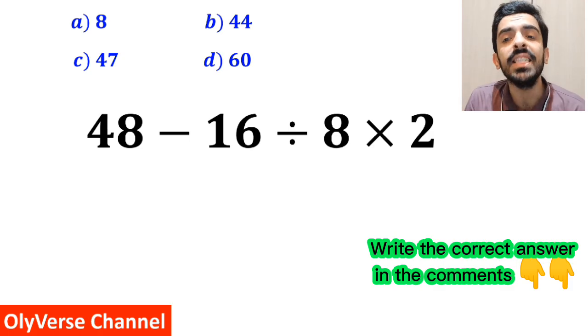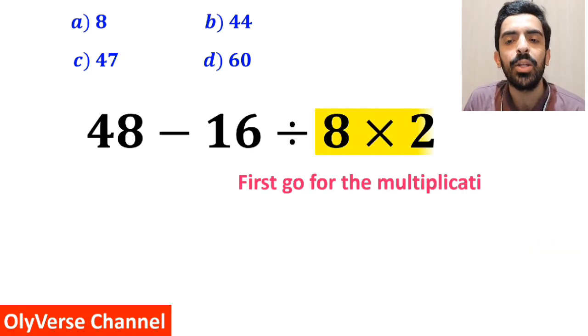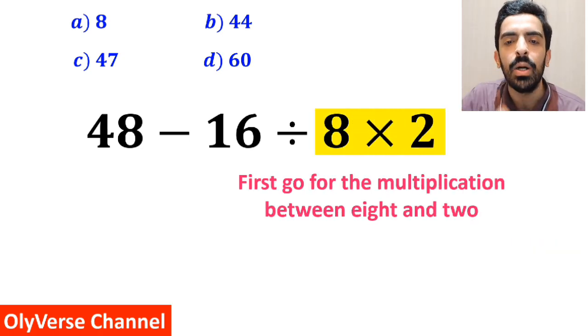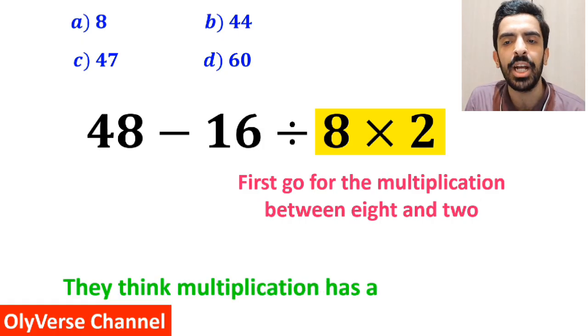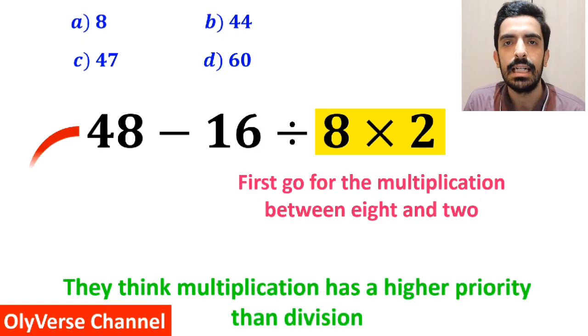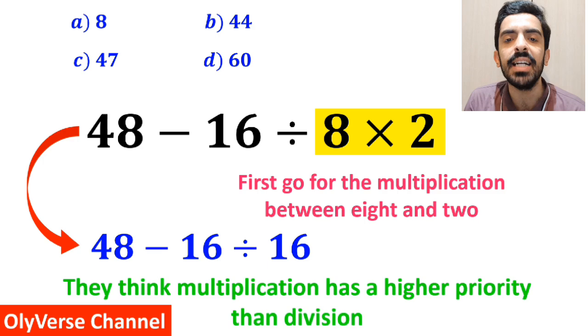Also, some other people when solving this question, first go for the multiplication between 8 and 2, because they think multiplication has a higher priority than division. So they rewrite this expression as 48 minus 16 divided by 16.